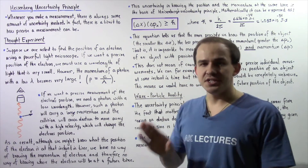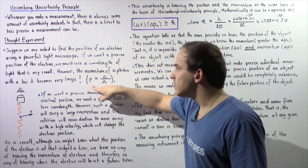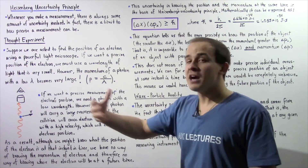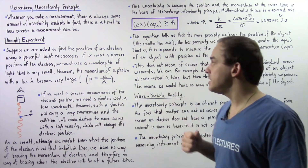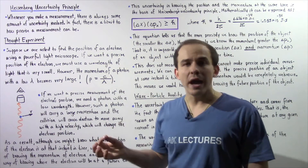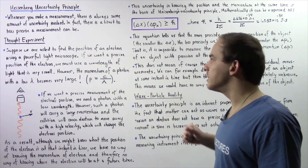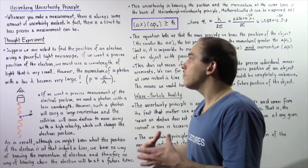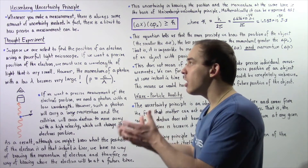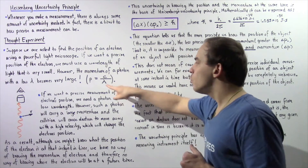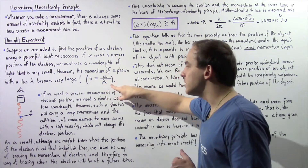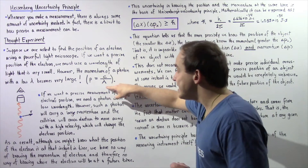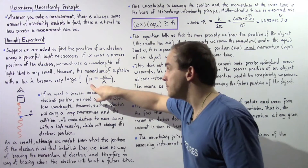That is given by this equation. The momentum of the photon of light used by the microscope, P, is equal to C — the constant that gives us the speed of light in a vacuum — divided by the wavelength of light used by the microscope, given by lambda. So basically, if we want a more precise location of the electron at some moment in time, we have to decrease the wavelength of light. But if we decrease the wavelength of light, we decrease the denominator and thereby increase P, the momentum of the photon.